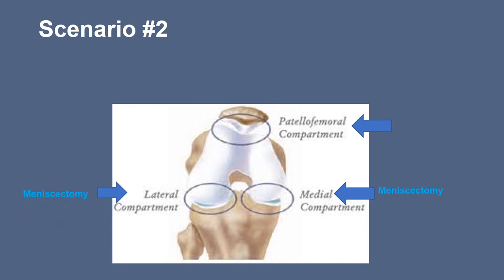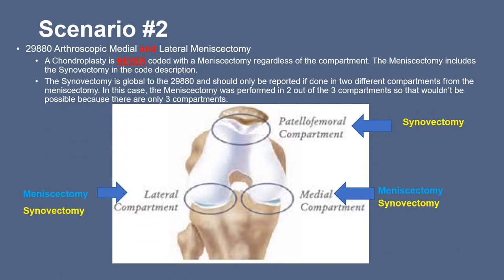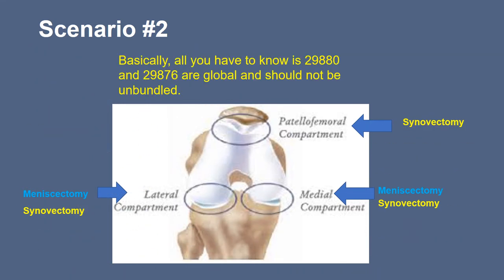The meniscectomy was done in both the medial and lateral compartment, and the synovectomy was done in all three compartments. 29880 for medial and lateral meniscectomy is the only code reported. The chondroplasty is never coded with a meniscectomy regardless of the compartment. The synovectomy is global to 29880 and should only be reported if done in two different compartments from the meniscectomy. Since the meniscectomy was performed in two out of three compartments, that wouldn't be possible. 29880 and 29876 are global and should not be unbundled.